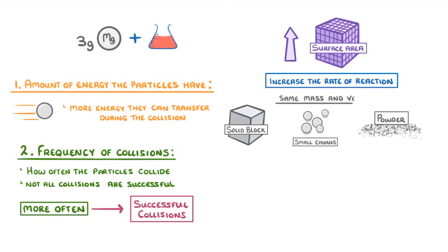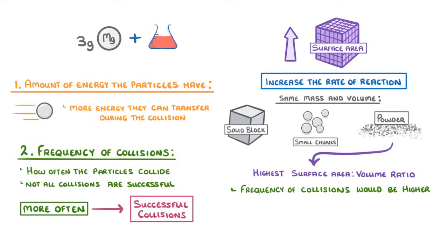As all of these have the same mass and volume, the powdered form would have the highest surface area to volume ratio, and so it would have a much higher area over which collisions with the other reactants, in this case the acid, could take place, meaning that the frequency of the collisions would be higher, leading to a higher rate of reaction.